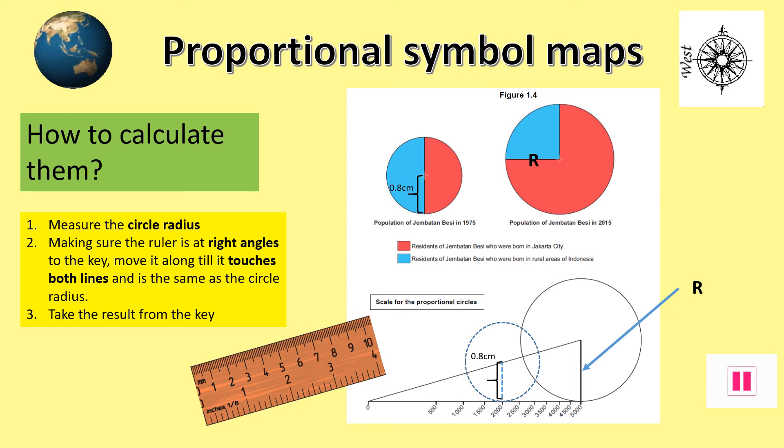I then repeat the process with the larger circle, shown in red on the key below. In summary, I can tell that between 1975 and 2015, the village has doubled in size from 2000 to 4000 people.